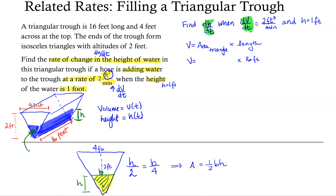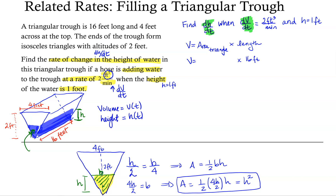Solving for b in the proportion h/2 = b/4, we multiply both sides by 4 to get b = 4h/2. So the area is 1/2 · (4h/2) · h. The two 2s in the denominator multiply to give 4, so the area simplifies to h². If we're looking for a rate of change in terms of h, this is far more useful than having the formula in terms of b. The area of the water against the end of the trough is h².